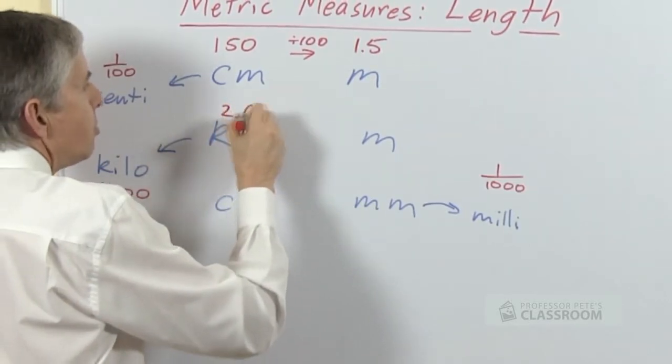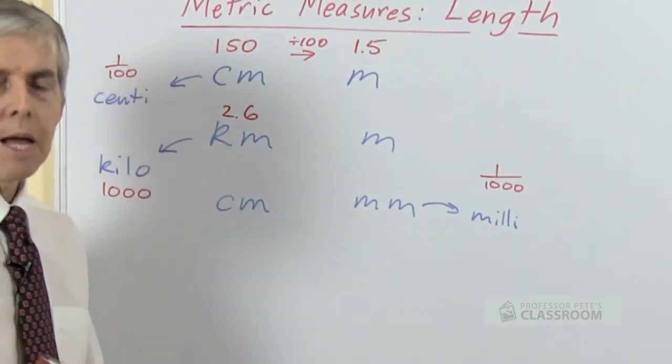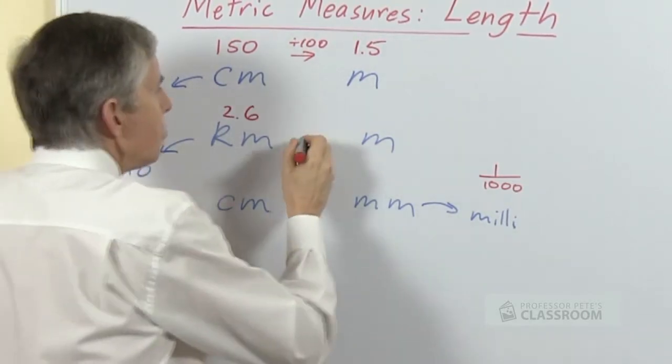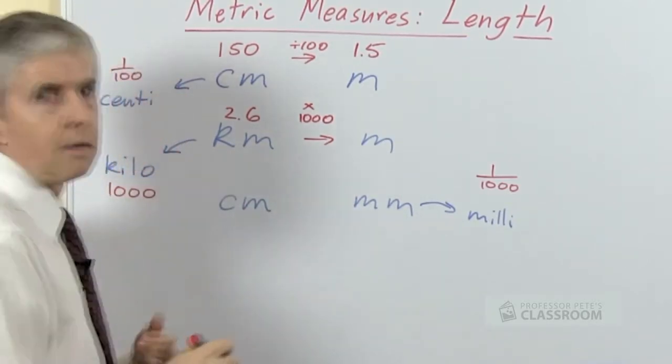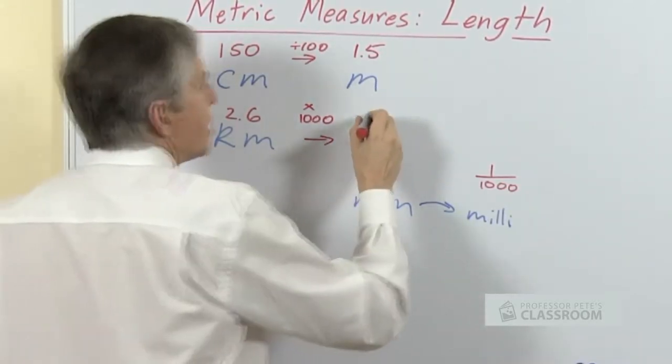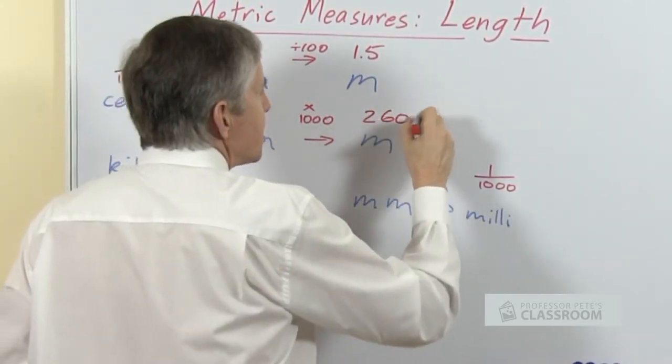Let's say we had 2.6 kilometers. How many meters would that be? The conversion factor this time is times 1,000. 2.6 times 1,000 will be 2,600.